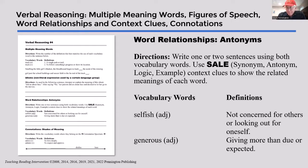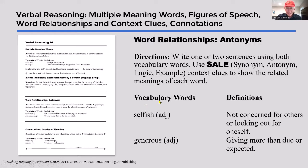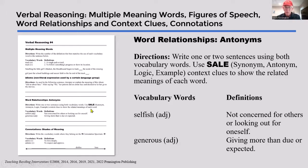Word relationships are very important — synonyms, antonyms, some of the old SAT analogy relationships — these are all part of verbal reasoning, understanding how categories and subcategories interact with each other.